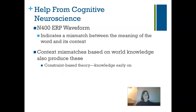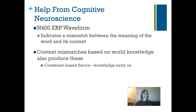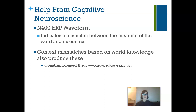Let's finish up the discussion of parsing and then briefly talk about pragmatics and drawing inferences in language. Some additional evidence from cognitive neuroscience of how we resolve ambiguity comes from work on the N-400 ERP waveform.